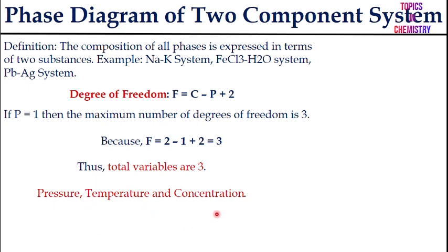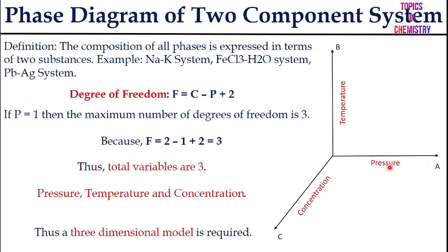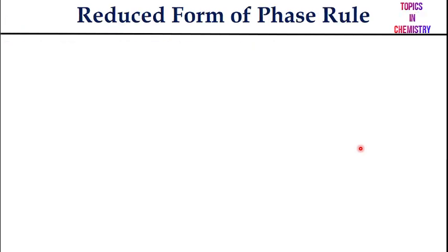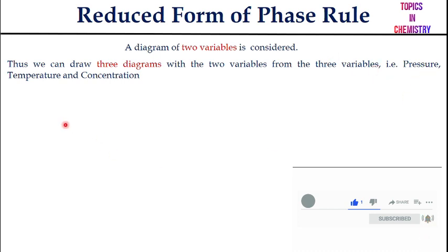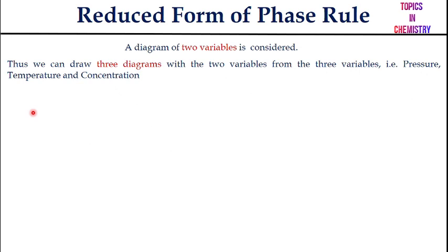Those three variables are pressure, temperature, and concentration. If you plot a pressure-temperature-concentration curve, you get a three-dimensional model, which is a highly complicated diagram. To simplify, you need to consider diagrams of only two variables at a time, giving a two-dimensional curve.